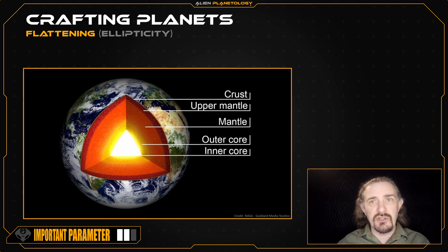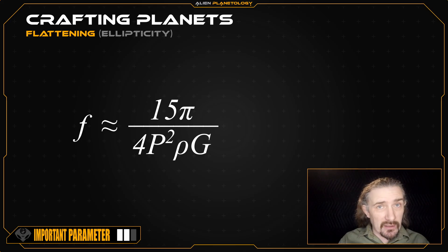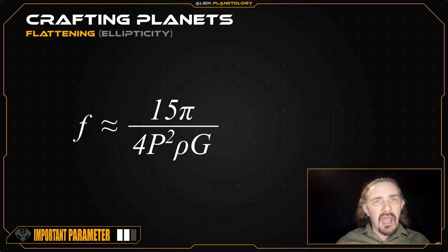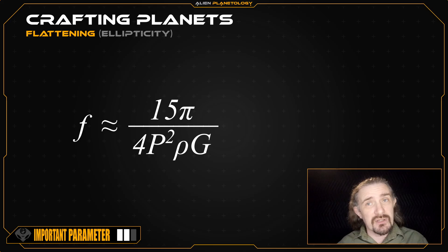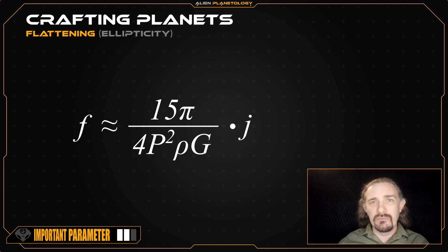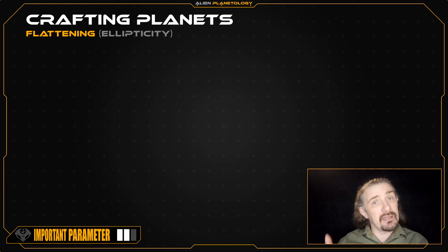Accurately calculating how a complex object such as this deforms under a force is extremely complicated. That's why when astrophysicists are considering the flattening of exoplanets, they tend to use an approximation, such as the one currently on screen. It approximates a planet's flattening by ignoring all of that internal complexity and assuming the planet to be a solid object of uniform density throughout. Though not realistic, it's usually accurate enough for most applications. However, I'm going to tack on an additional, admittedly unscientific, term onto the end of the equation that will hopefully nudge it closer to a realistic value.